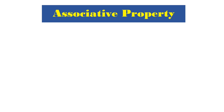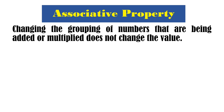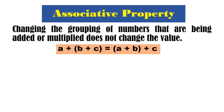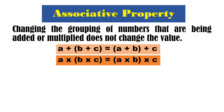How about the associative property? Changing the grouping of numbers that are being added or multiplied does not change the value. Kung kanina ang commutative property is all about the order, ang associative property ay grouping. We represent it as: A plus the quantity of B plus C equals the quantity of A plus B plus C. For multiplication: A times the quantity of B times C is equal to the quantity of A times B times C.